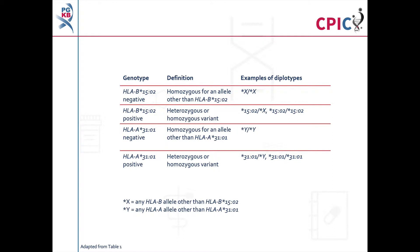Genotyping results for HLA-A*3101 and HLA-B*1502 are reported as either negative, for patients with no copies of either allele, or positive, for patients with one or two copies of the HLA-A*3101 or HLA-B*1502 alleles.